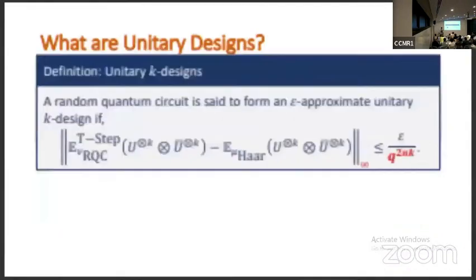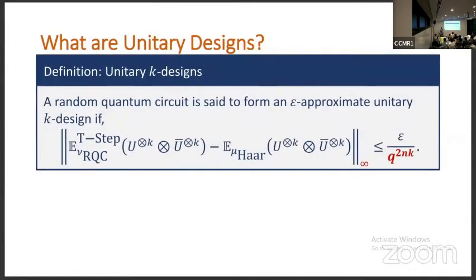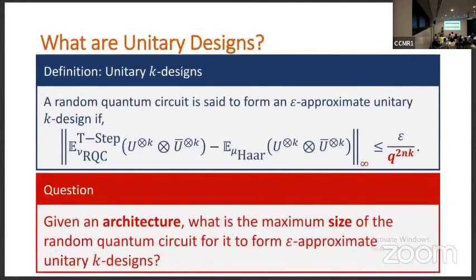Since both of those measures are really hard to directly compute, we never really directly compute them. What we work with is simpler notion of distinguishability. We vectorize our channels, and then we demand an exponentially small operator norm. So that is the operational definition of designs that I'll be working with. And I'll be showing what is this T? How large does this T need to be given some architecture? What should this T be such that we get an exponentially small operator norm?